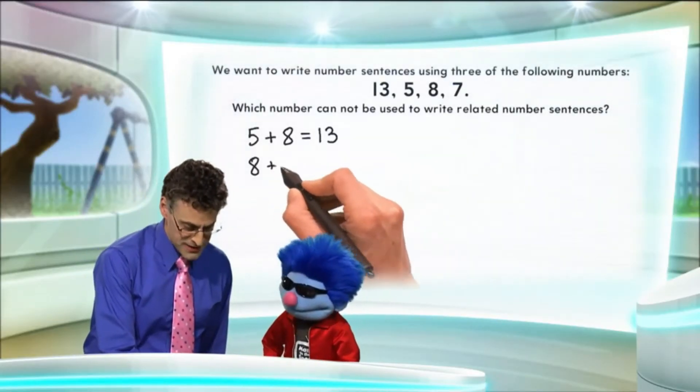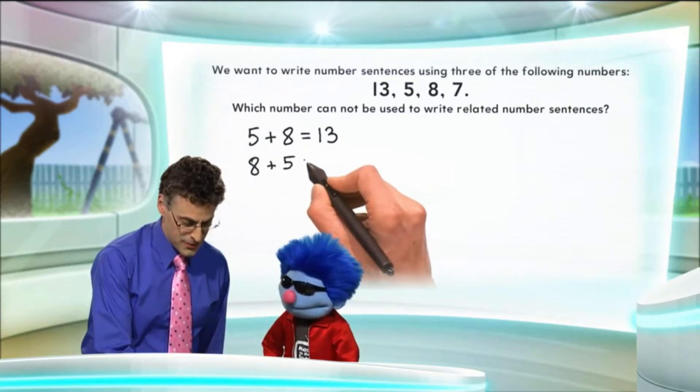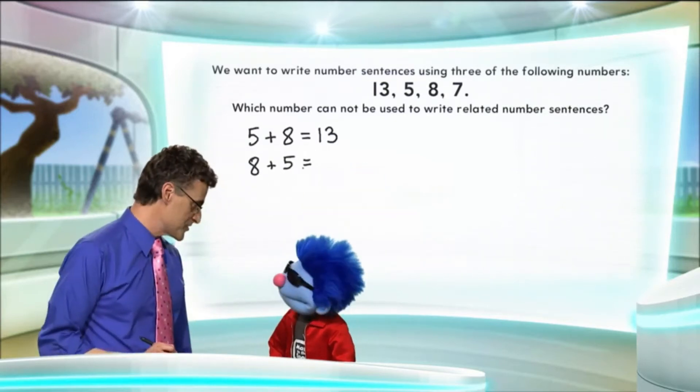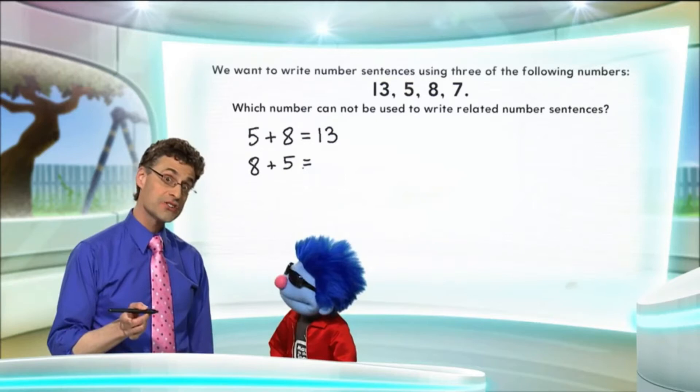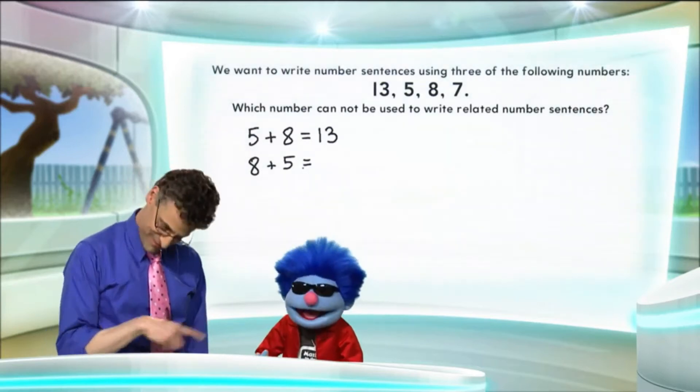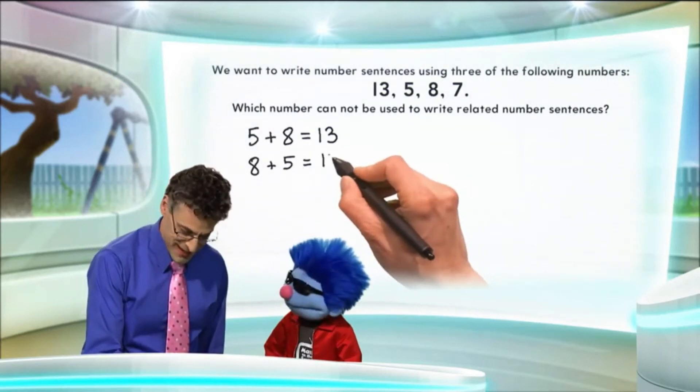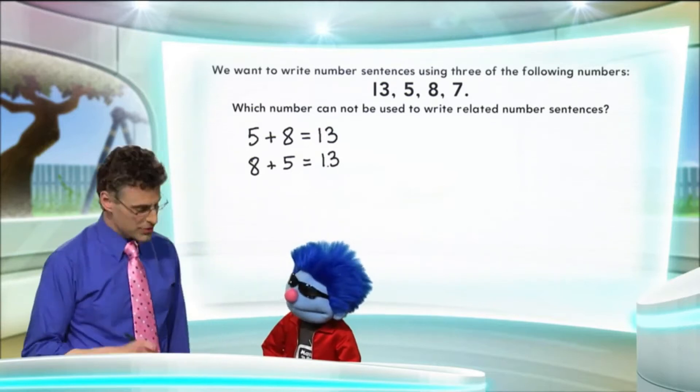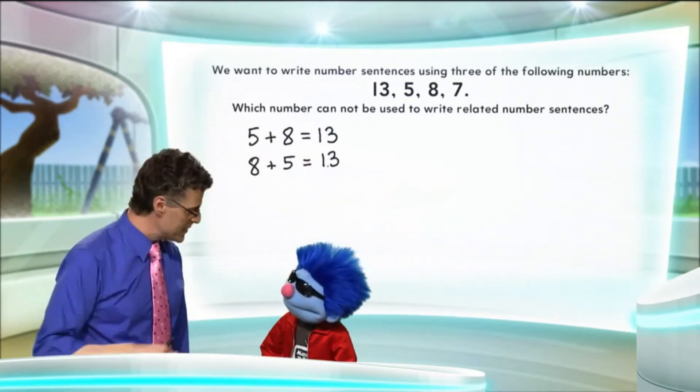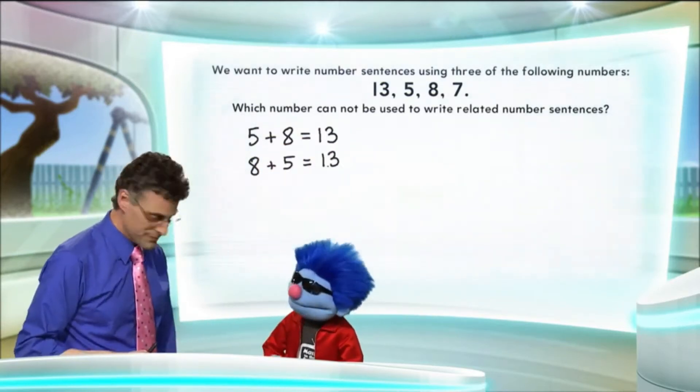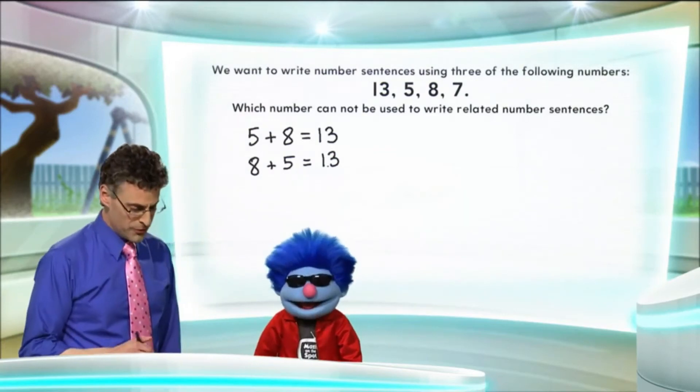Okay. Now, here's a related number sentence. What about eight plus five? Well, if we figure out that number sentence, we see that eight plus five is actually still thirteen. That's cool. And so there's another, and that's a related fact, because we're using the same numbers even though the order's different.